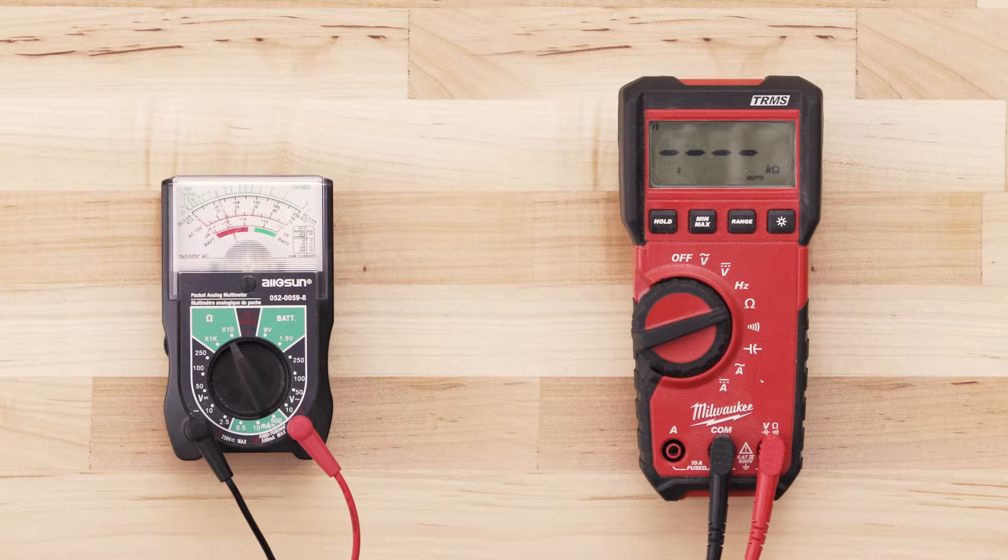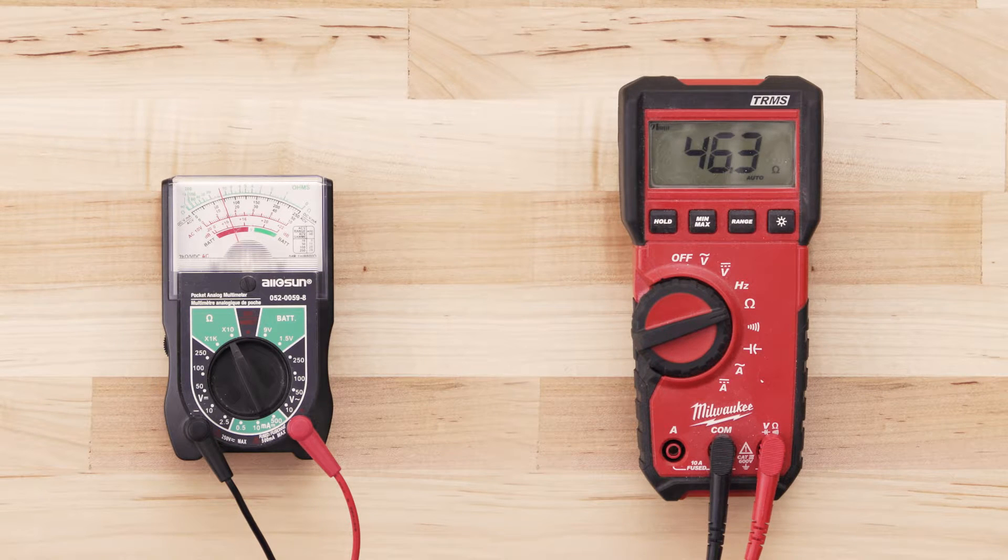If the element has continuity, your multimeter should read anywhere from zero to 50 ohms.